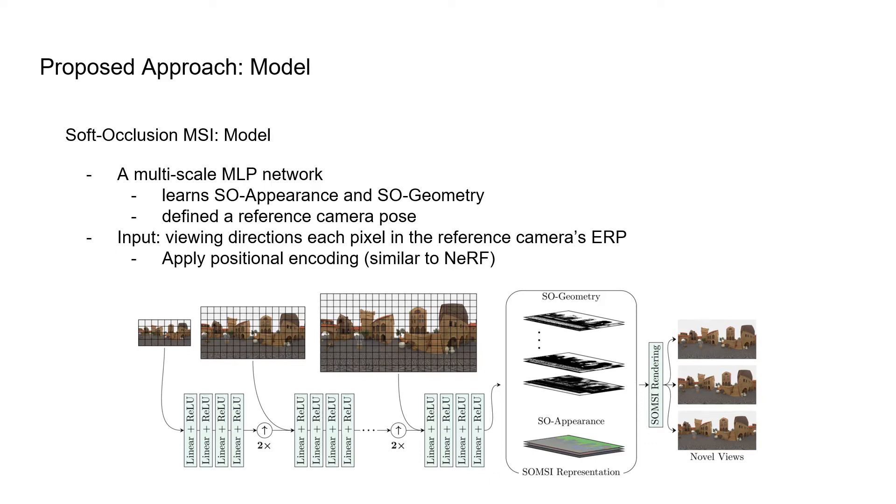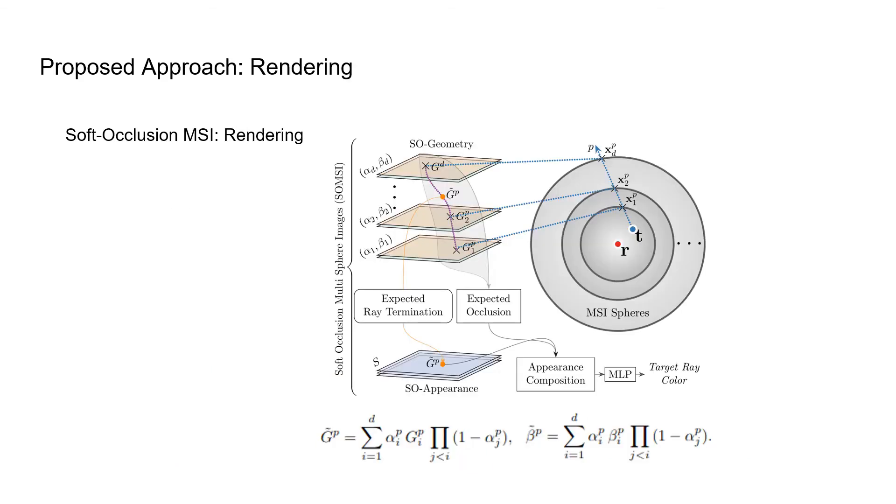The MLP network takes elevation and azimuth angles of each pixel in the reference camera's input. Similar to NERF, we also apply positional encoding to the inputs of the MLP. If the reference camera corresponds to one of the input views, we also use the RGB color values as additional input to the model.